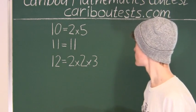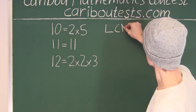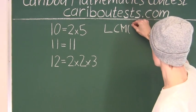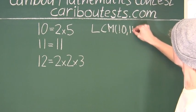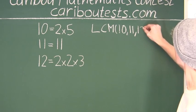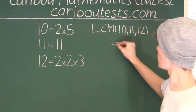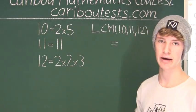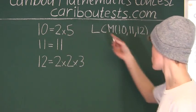All right, now the lowest common multiple of 10, 11, and 12 equals... we need to collect all prime factors. So we start with the smallest factor, which is 2.